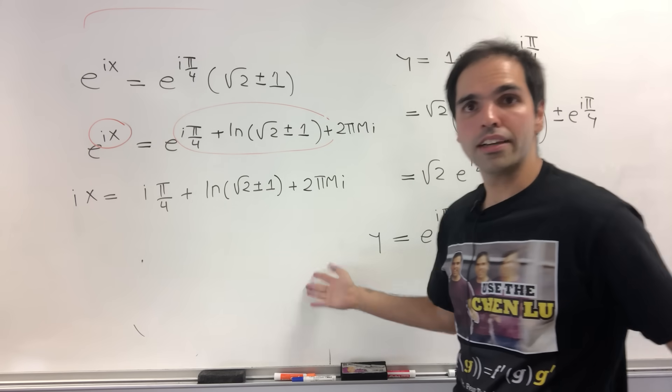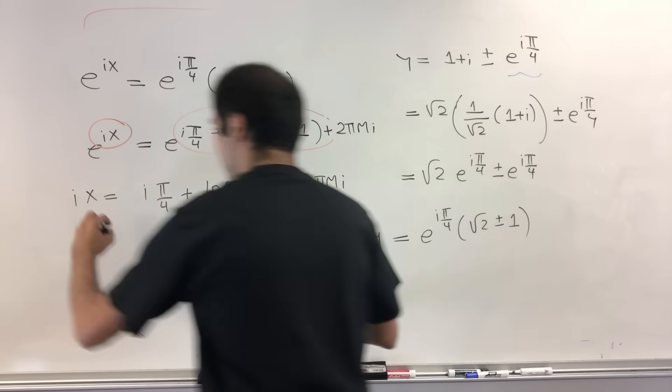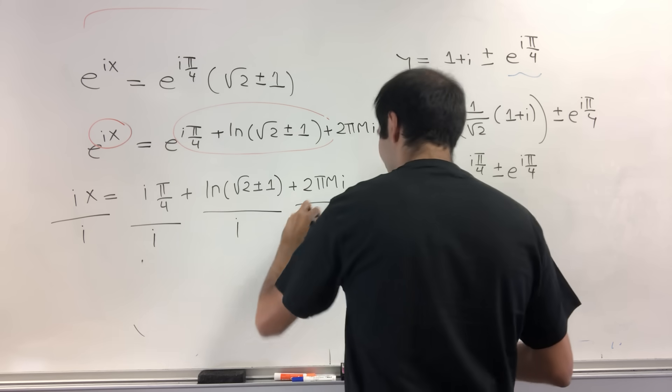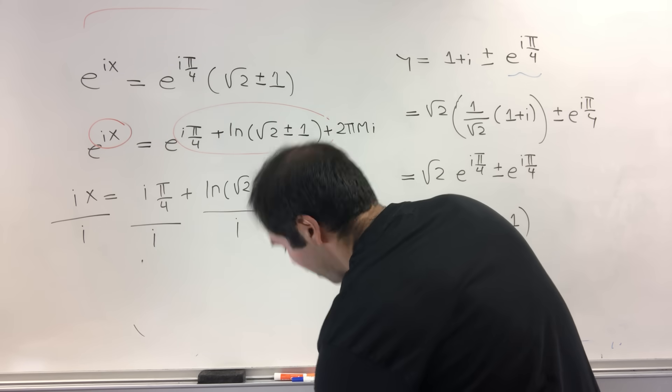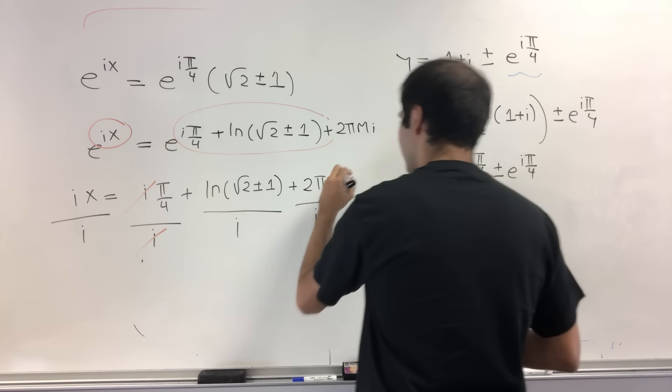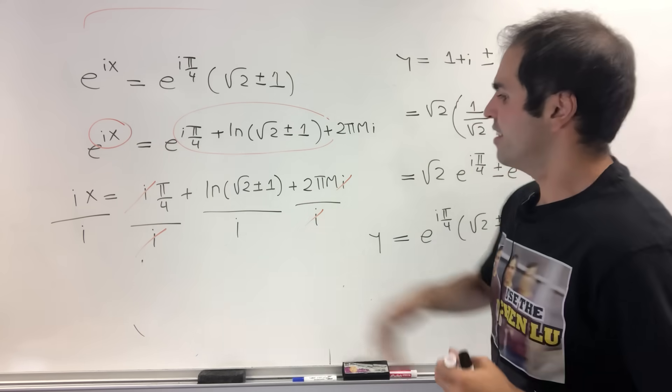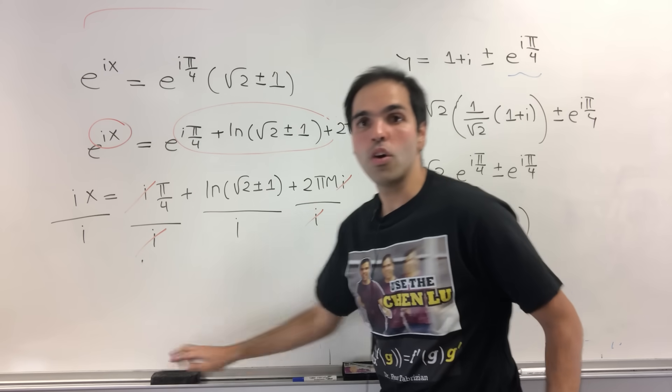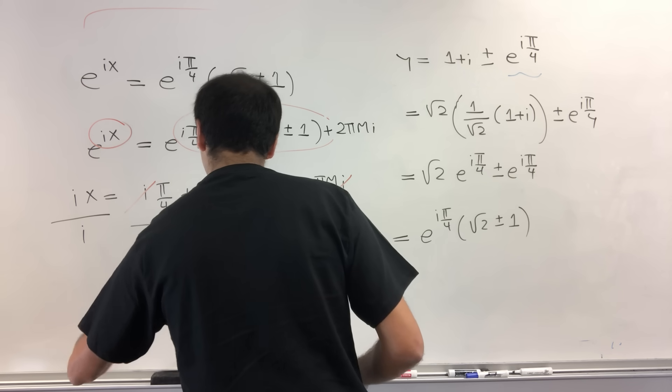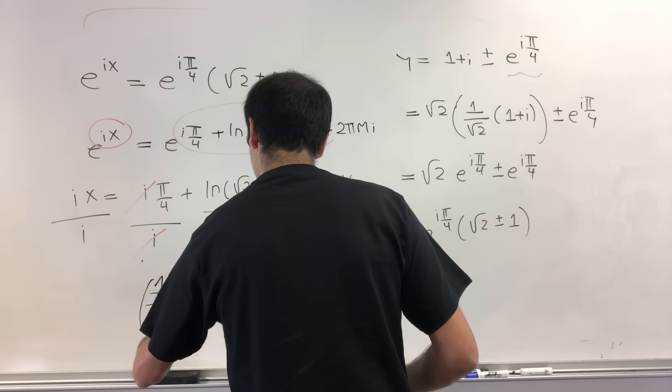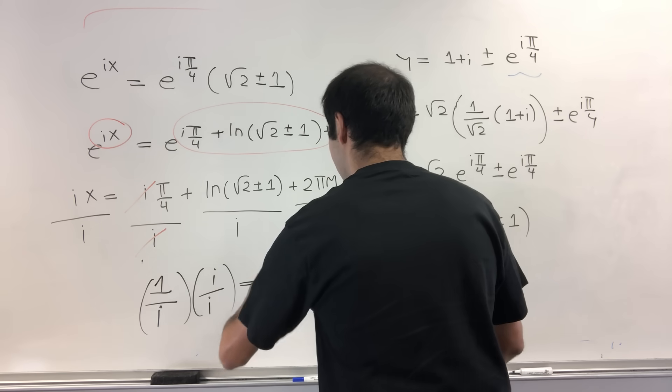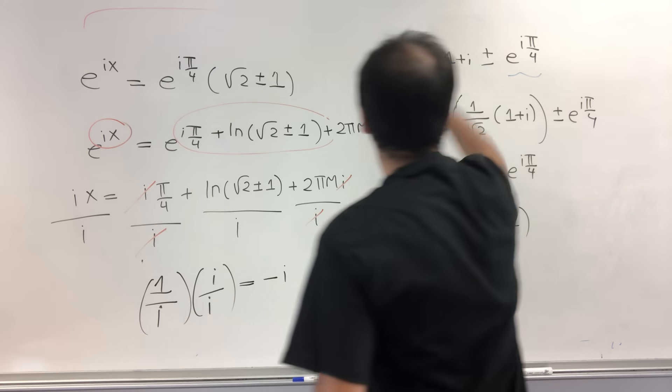And then we can solve for x, because now we get ix equals iπ/4 + ln(√2 ± 1) + 2πmi. And now to find x, just divide by i, divide by i, divide by i, over i, over i. And here the i's cancel out. And just remember what is 1 over i. Again, just multiply top and bottom by i. And then you get i/i², so just -i.